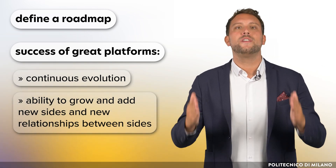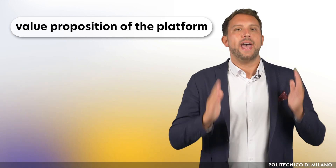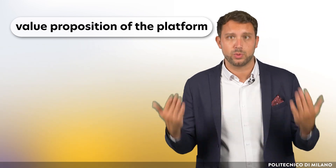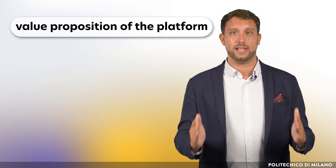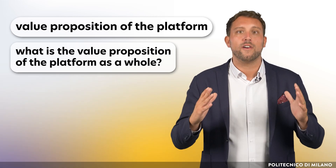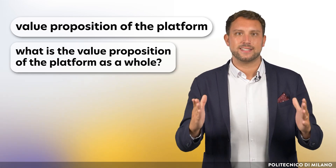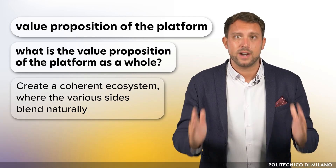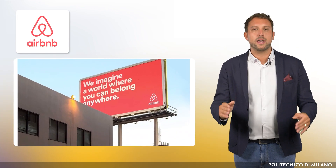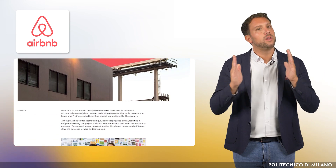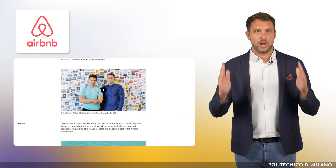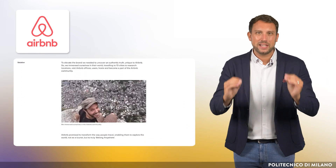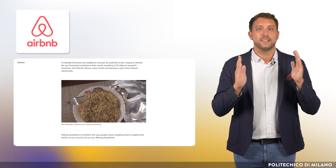To do this, we need to think about two elements. The first is the value proposition of the platform. Adding new sides is an interesting opportunity to maximize the profit of the platform, but it must be done with knowledge: what is the value proposition of the platform as a whole? Giving a clear answer to this question is a necessary condition to create coherent ecosystems where the various sides blend naturally. From this point of view, it is nice to quote Airbnb, which with its slogan 'Belong Anywhere' promotes the local dimension of its global platform, helping travelers to see cities through the eyes of locals, sleeping in their homes and living local experiences thanks to the experience providers.